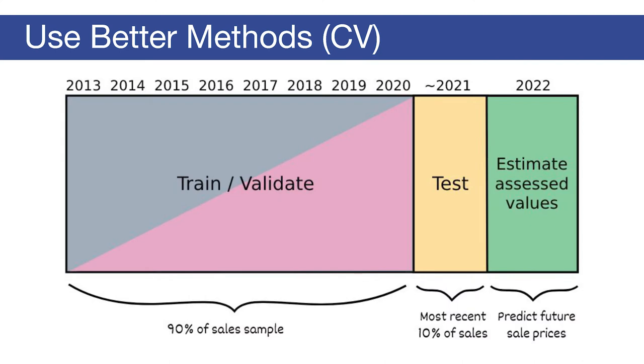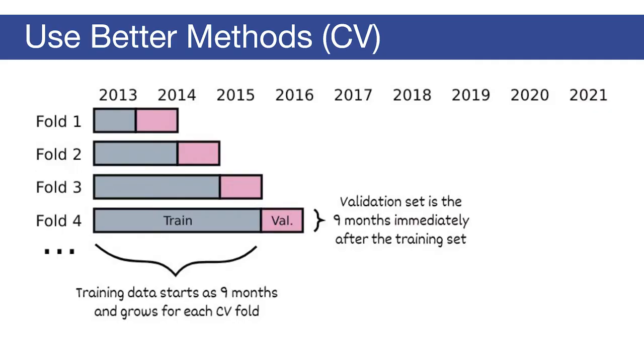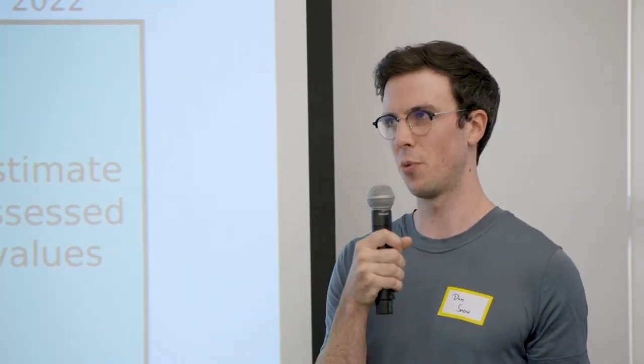We also switched to a better cross validation method. When we're doing assessments, we are trying to estimate value in the future — we're training the model on past sales to predict the assessed value at January 1st in the year ahead. One way to ensure the model is good at doing that is to have a test-train split that holds out the most recent sales. To improve further, we use rolling origin cross validation, which ensures we're training the model and selecting parameters in such a way as to always get the best predictions into the future. And then ultimately when we do the final assessments, we train on all the data right up until the date before assessment — December 31st of 2021 in this case.